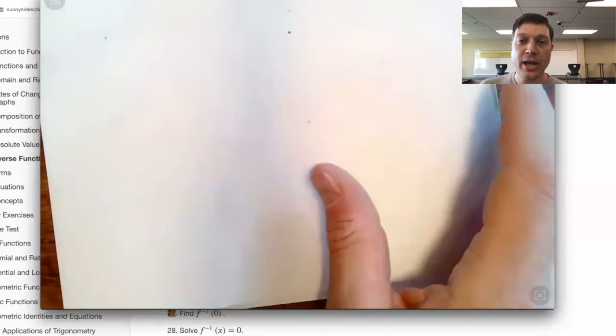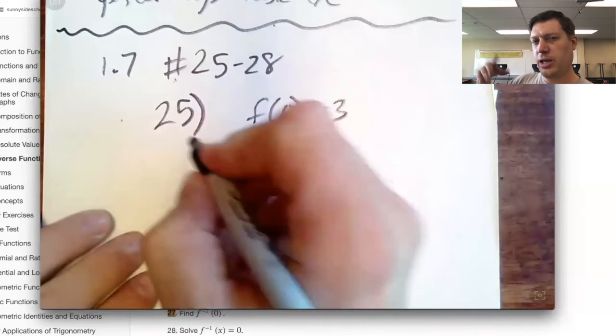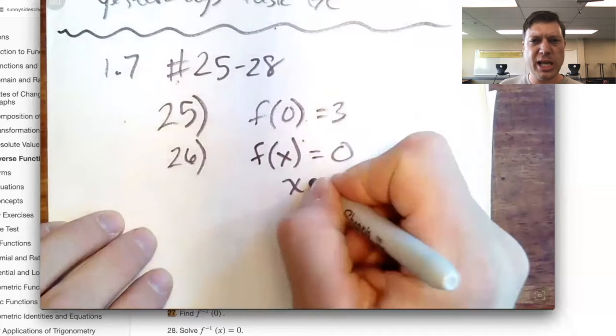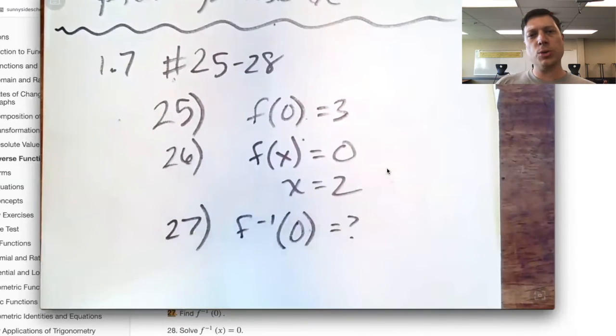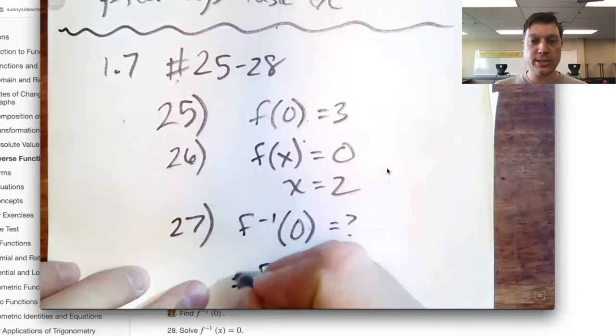So we're looking at the flip of the function. Inverse f of inverse might actually be like looking for an x coordinate and then the y coordinate that matches it. So if we know f of zero means look at the y intercept, it's three. And we know that f of x equals zero means look at the x intercept. That's two.